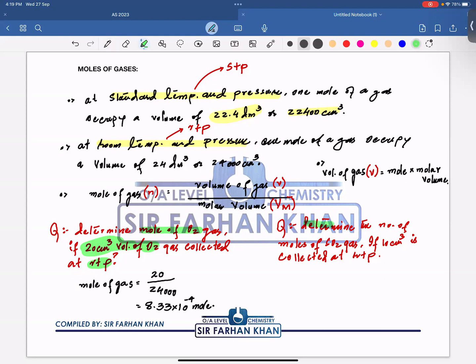Let's talk about the second question. So, can you determine the number of moles of sulfur dioxide gas if 10 cm³ is collected at RTP? So obviously, I am going to calculate the number of moles of sulfur dioxide gas equals to volume of gas 10 cm³ and volume at RTP, that is molar volume, is 24,000 cm³. So 10 divided by 24,000 is going to be 4.166 into 10 to the power minus 4 moles. And that's my answer.